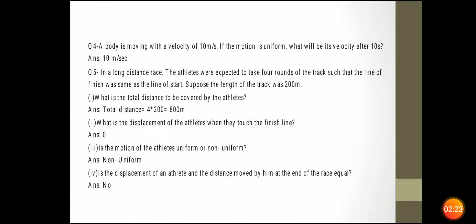In a long distance race, the athletes were expected to take 4 rounds such that the finish line was the same as the start line. The length of the track was 200 meter. The total distance is 4 × 200 = 800 meter. The displacement is 0 because the starting and ending point are the same. The motion of the athlete is non-uniform because somewhere the speed is more and somewhere less. The displacement and distance are not equal — displacement is 0 but distance is 800 meter.